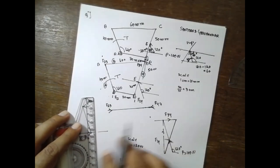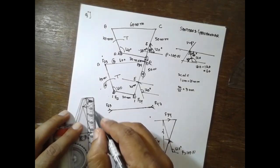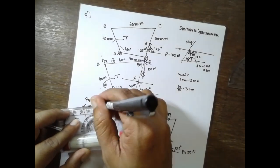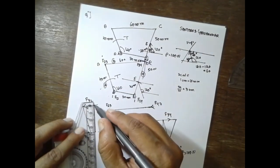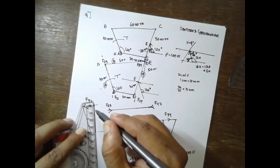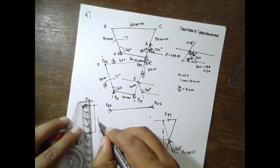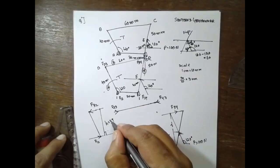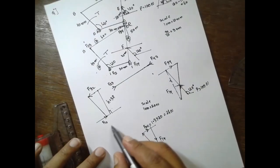Now find out the height. Find out the height — it should be perpendicular to this one. Perpendicular to this one. If you measure the height of this one, it will be 3.9. H is equal to 3.9 — it should be perpendicular to this one.